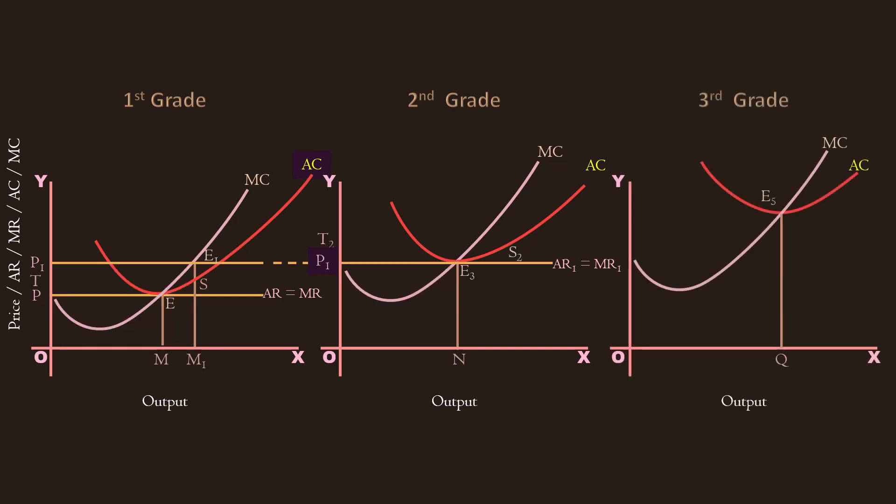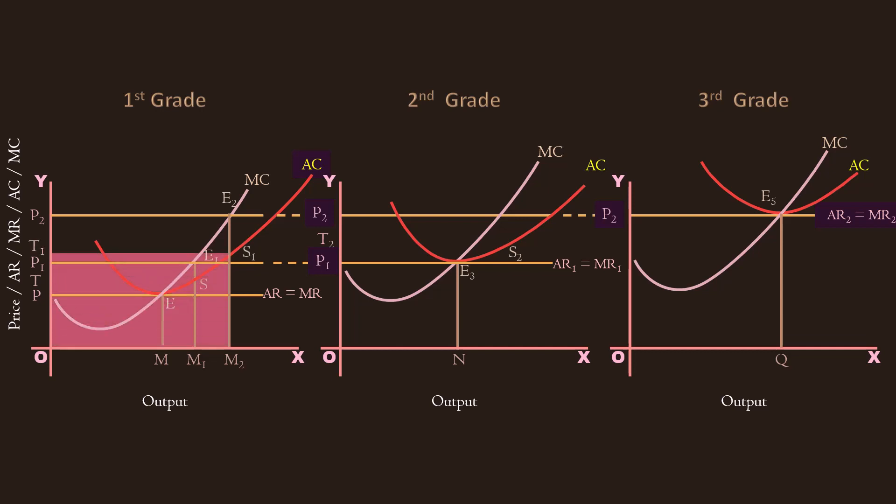Third group of settlers go to the island. It pushes the corn price further up. Corn price moves up from P1 to P2. First grade land is cultivated more intensively than before. Its output is M2. The cost of cultivation is O T1 S1 M2. Its revenue is O P2 E2 M2. It earns a rent of T1 P2 E2 S1.